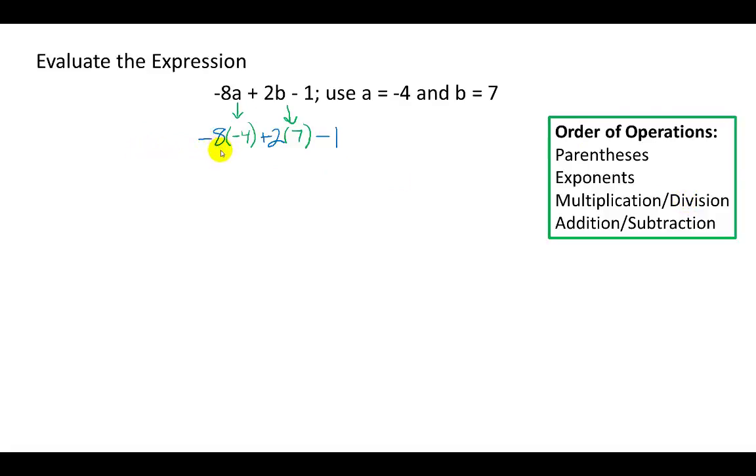Working from left to right, we get -8 times -4. Negative times negative is a positive. 8 times 4 is 32.